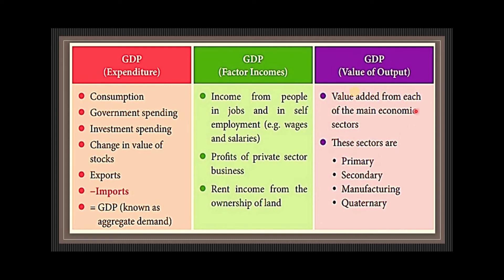The value added method can be seen as the total value of goods and services produced in a country in a period — this is called the product method or value added method. The important methods of measuring national income are the income or flow of earnings method and the expenditure method. Although these methods differ, they give the same final figure if we ignore minor statistical discrepancies. In the expenditure method, we use consumption, government spending, investment spending, change in the value of stocks, and exports minus imports — known as GDP. This method has already been discussed in an earlier video.